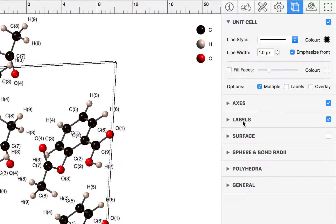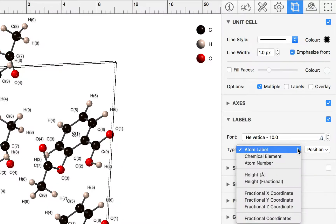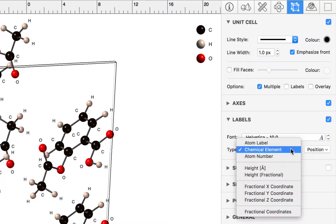Now you can control the label properties in terms of the size and the content of the label using this group. So you might want to just display the chemical element or the atom number or coordinates.